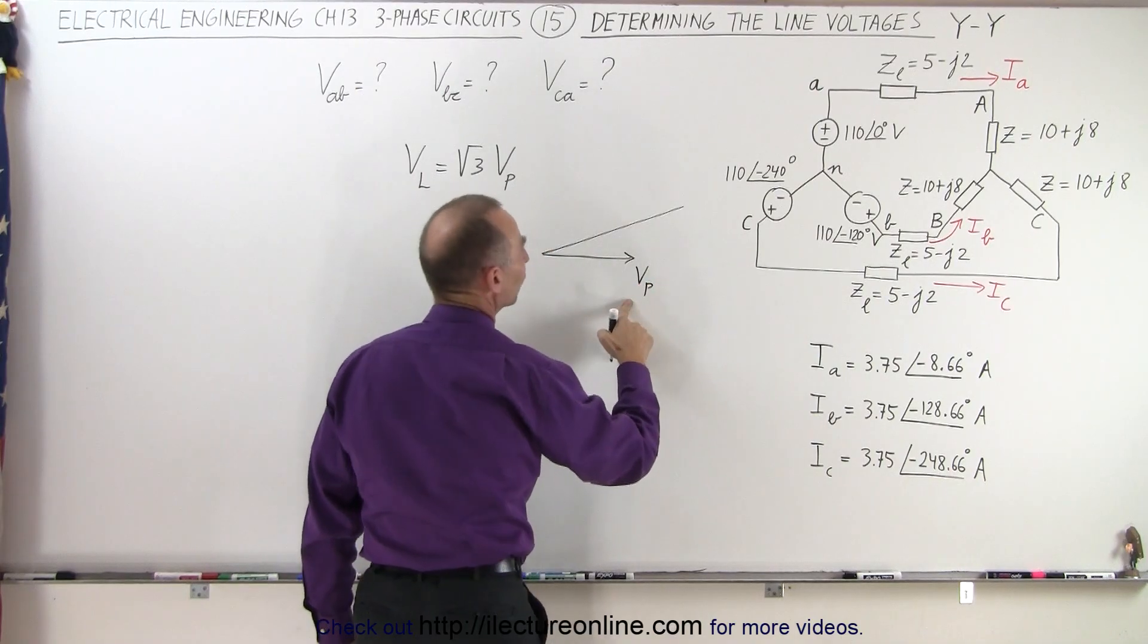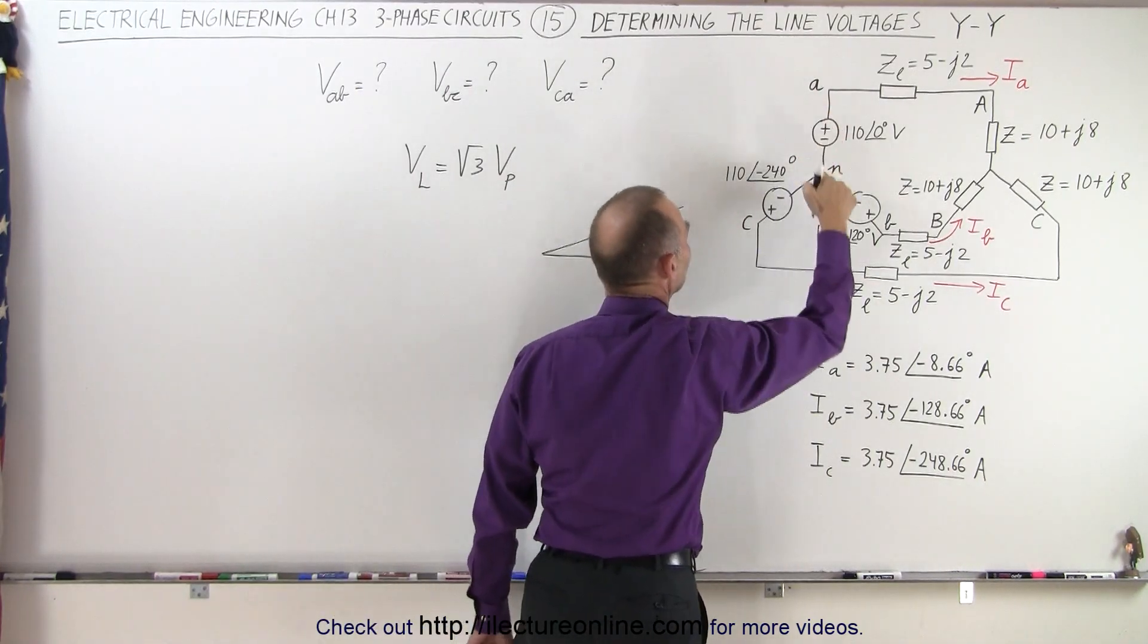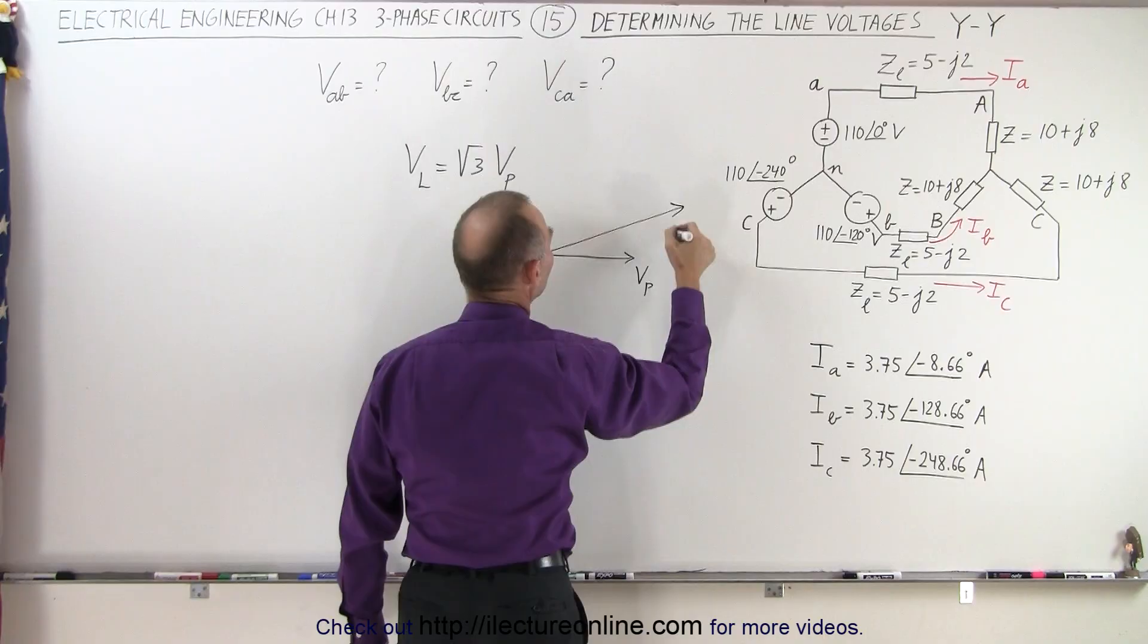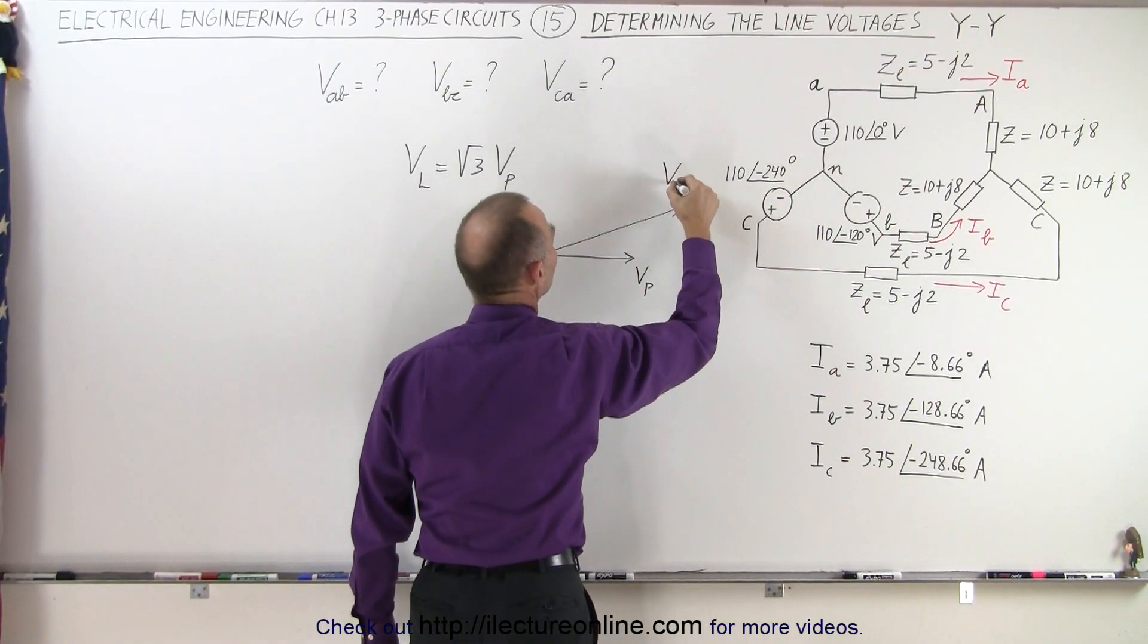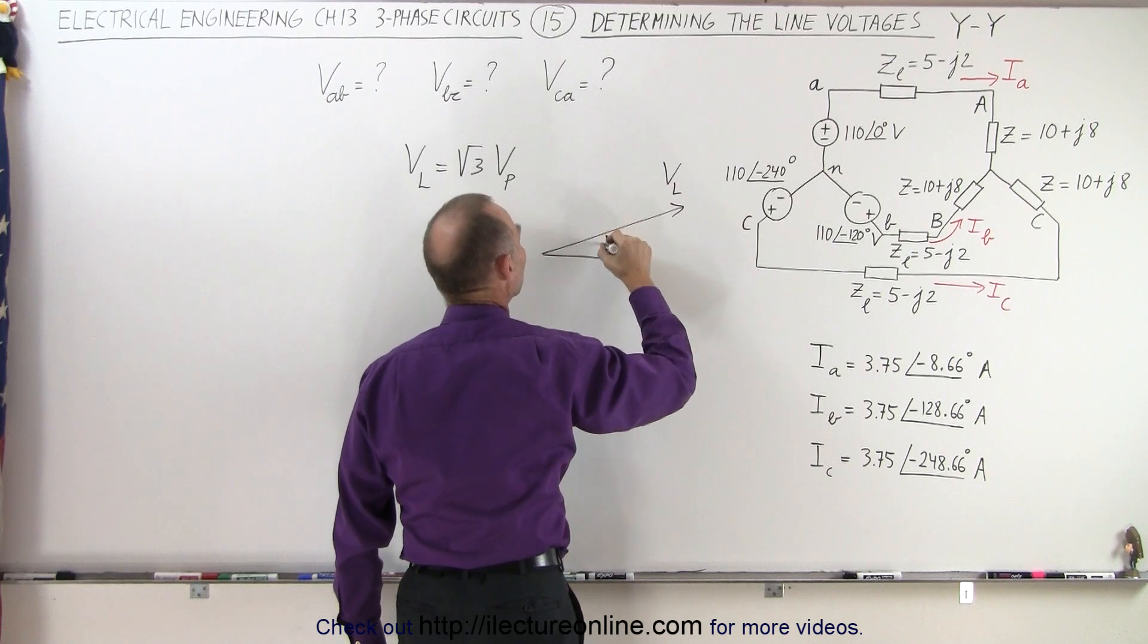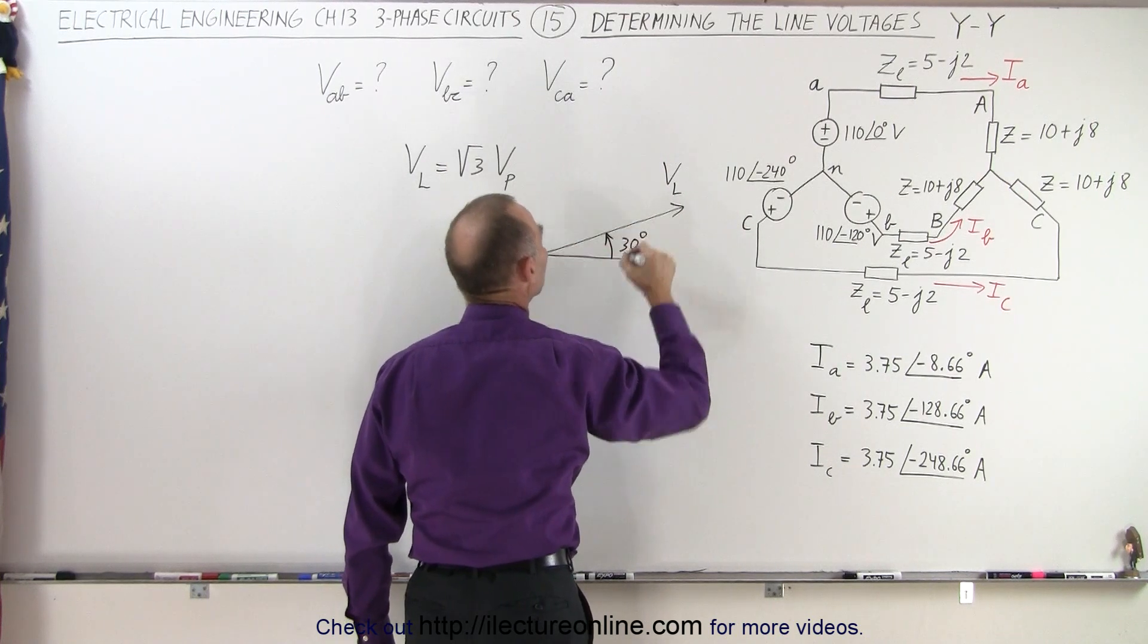Here, this will be the phase voltage, for example, the voltage between A and N. And then we have the line voltage between A and B. So this would be V line. And there's a difference, a phase difference, of 30 degrees.